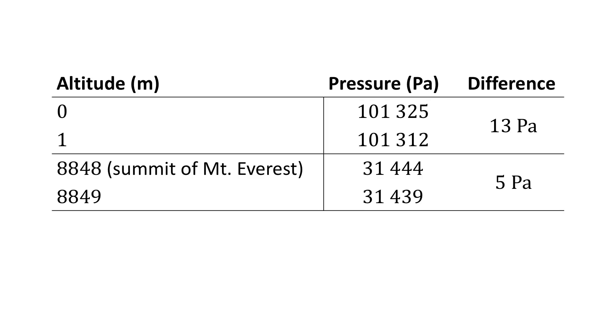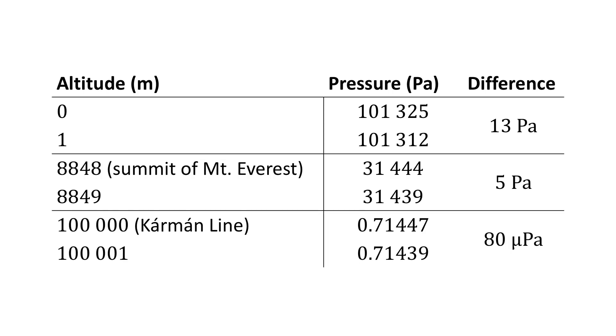But if we go up to the Kármán line, we measure 0.71447 Pascal, and one meter above that we measure 0.71439 Pascal, which is a difference of 80 micropascal. Now all these values would be slightly different if you were to really perform the experiment, because of weather conditions. But we seem to be perfectly happy with this relatively large pressure difference at sea level not equalizing.